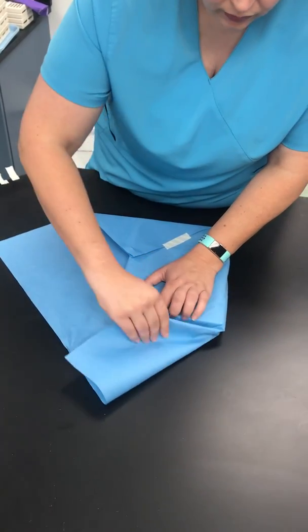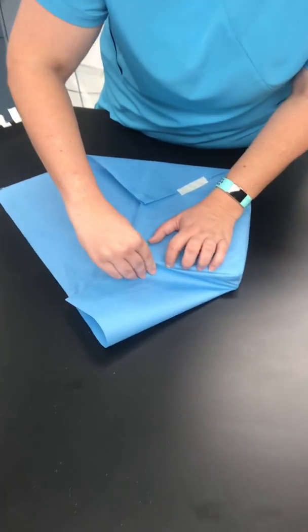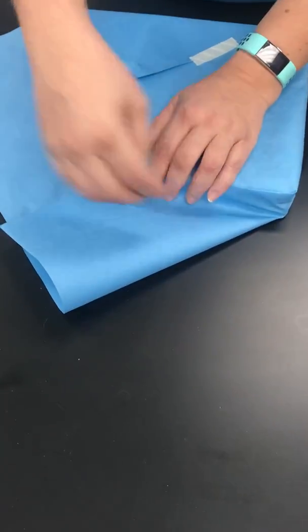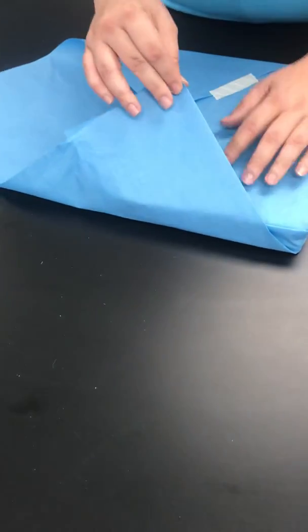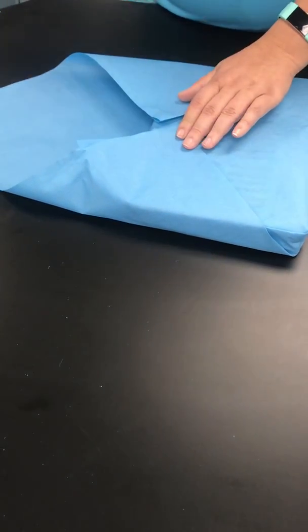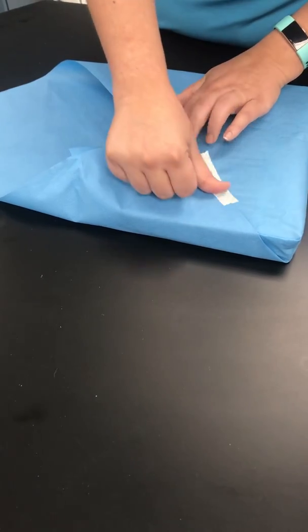So fold it over, hold it towards the top, make your crease, fold the wing all the way over, and place a piece of tape towards the middle.